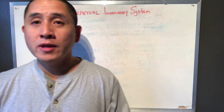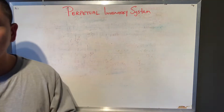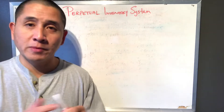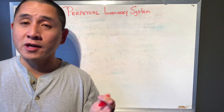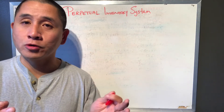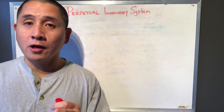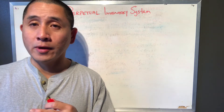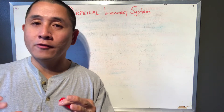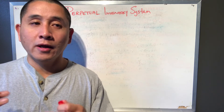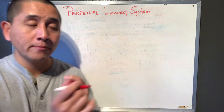There are certain benefits to using the perpetual inventory system as opposed to the periodic system, which I've discussed in one of my other tutorials. The periodic system requires an inventory count close to year-end in order to ascertain what the ending balance of inventory would be, in order to help you compute what the cost of goods sold would be.